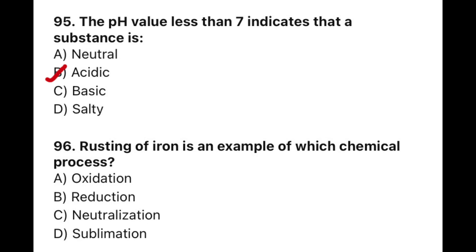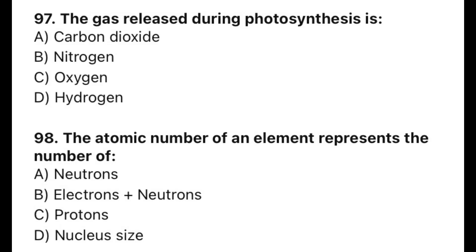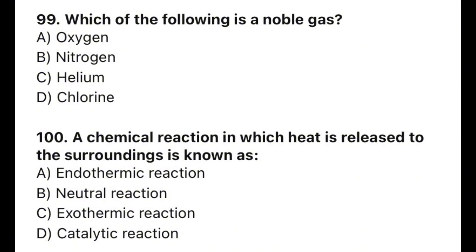Question 96: Rusting of iron is an example of which chemical process? The correct option is A — oxidation. Question 97: The gas released during photosynthesis is — the correct option is C — oxygen. Question 98: The atomic number of an element represents the number of — the correct option is C — protons. Question 99: Which of the following is a noble gas? The correct option is C — helium. Question 100: A chemical reaction in which heat is released to the surroundings is known as — the correct option is C — exothermic reaction.